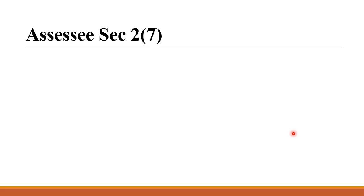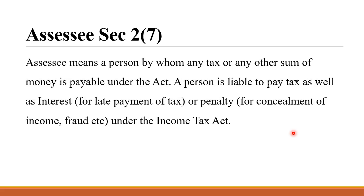The next concept is the Assessee under section 2 subsection 7. Assessee means a person by whom any tax or any other sum of money is payable under the act. So any person who has to pay tax is termed as an assessee. A person is liable to pay tax, as well as interest if there is a late payment of tax, or penalty for concealment of income or fraud under the income tax act.